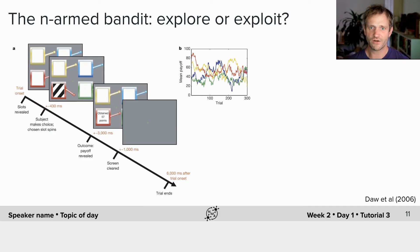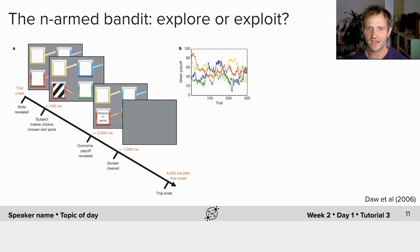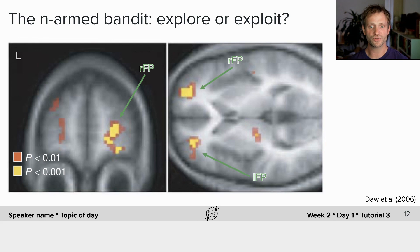Is there a neural signature for when we're thinking about exploring? In a classic study by Nathaniel Daw, subjects pulled arms on virtual bandits on a screen, and the payoffs drifted over time — meaning subjects had to track which arms they hadn't checked recently to see if they'd gotten better. When looking for neural signatures correlated with exploratory behavior, they found activity in the frontal pole, suggesting we may actively control how much we are exploring or exploiting.